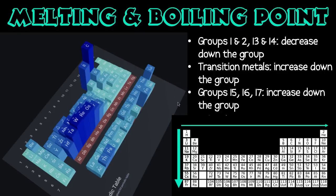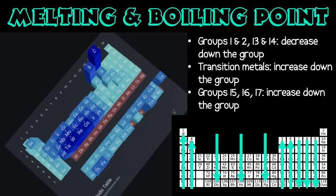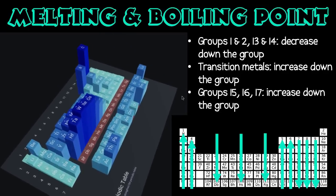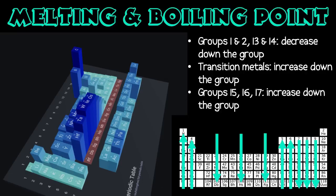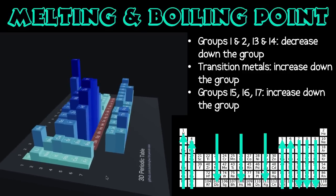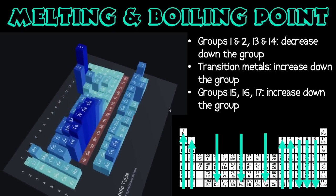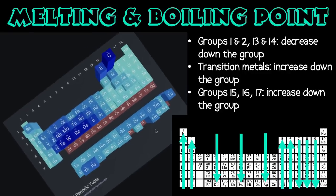The melting and boiling point trends are a bit complex as there are many factors that influence them, and the trends change depending on the group. For groups one and two, the melting and boiling points decrease as you go down the group. This is because as you move down these groups the atoms get so large that ionic interactions become harder to form, the forces holding them together are weaker, and therefore it takes less energy to break them.